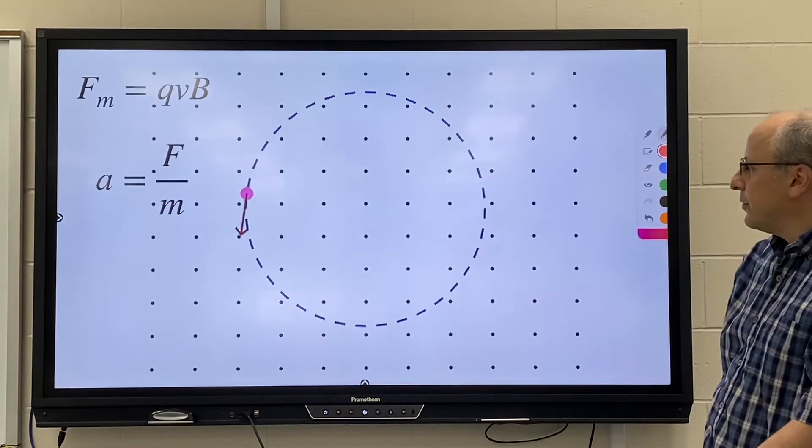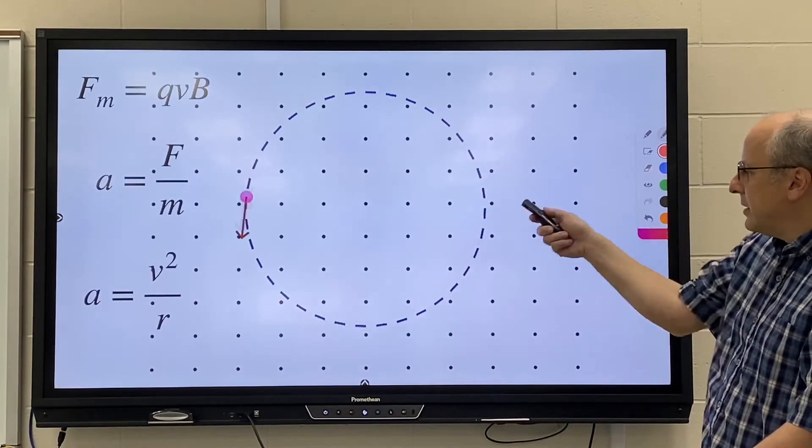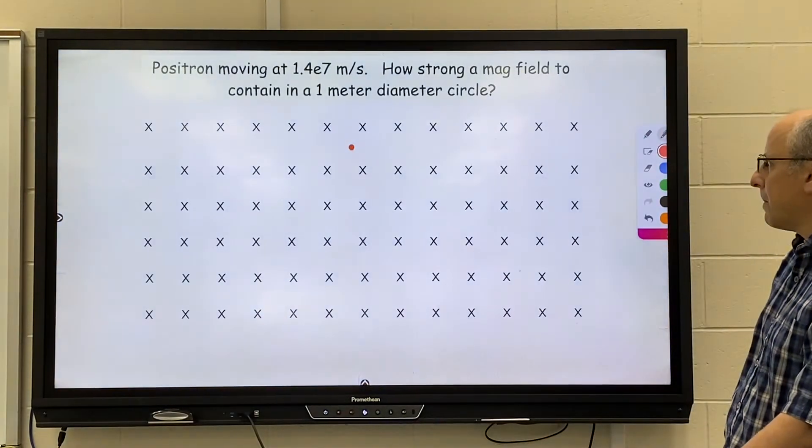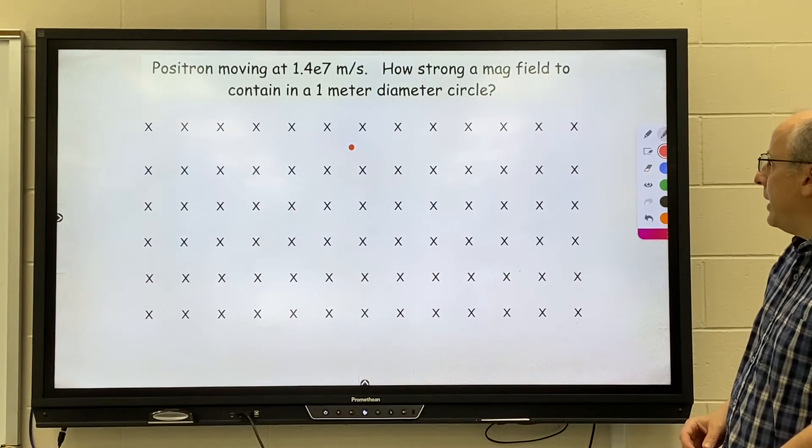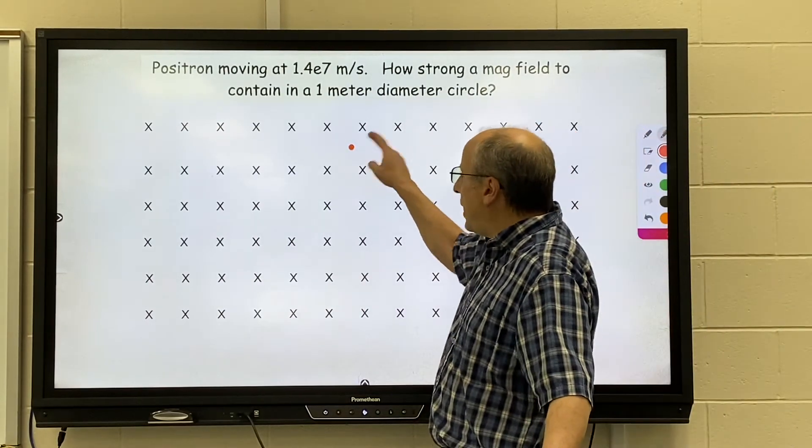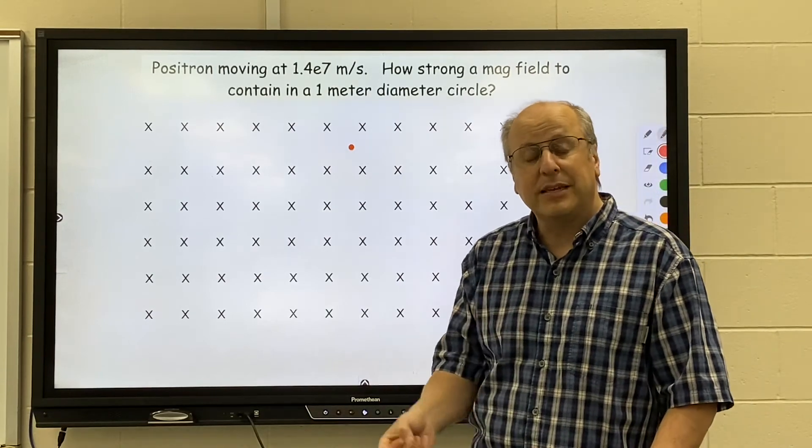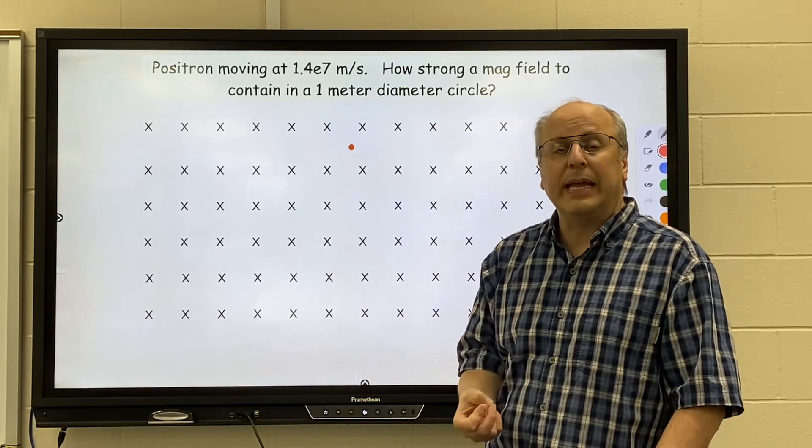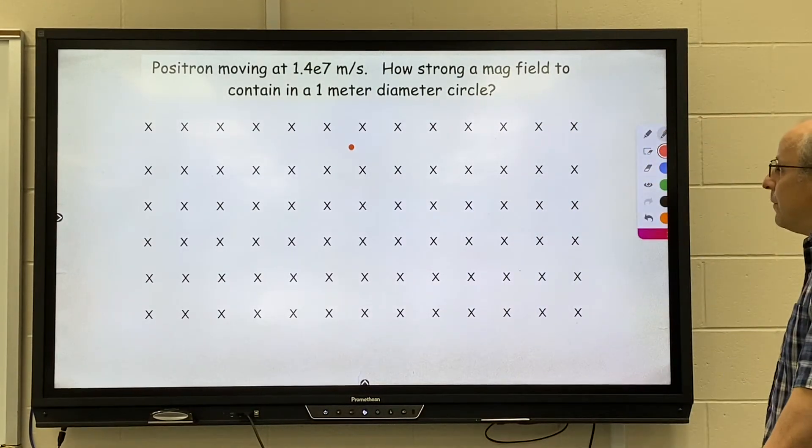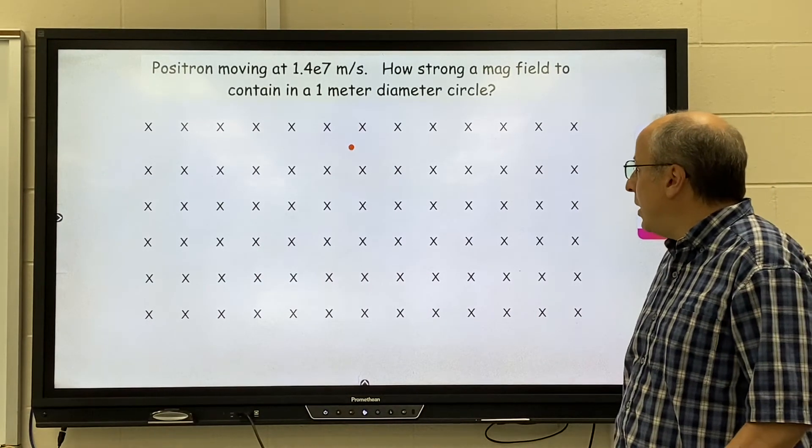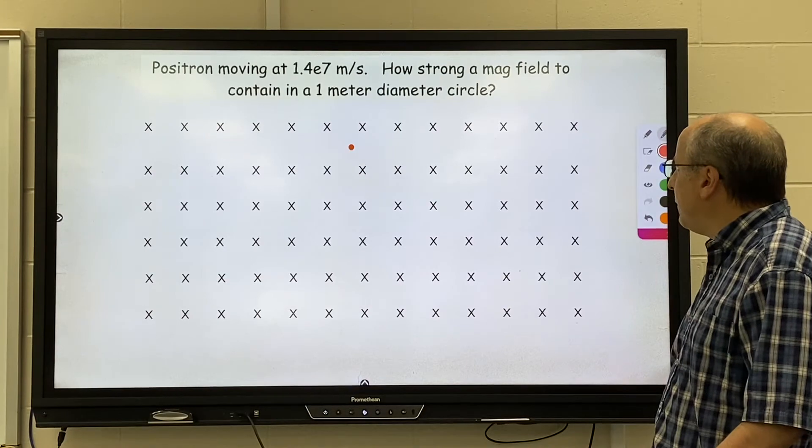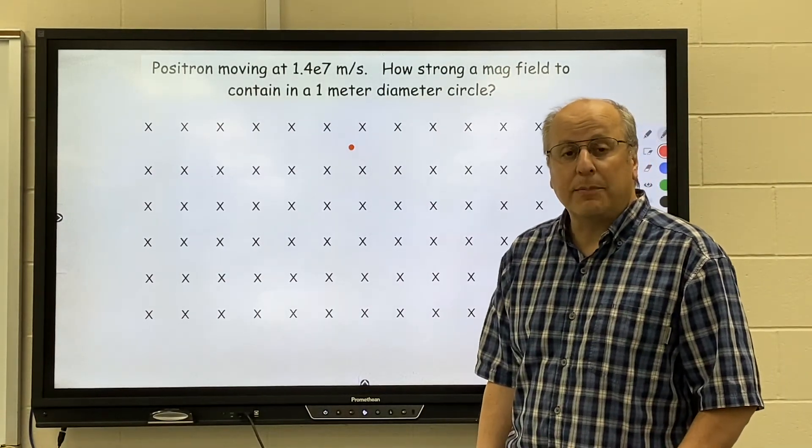Okay, so what I'd like you to do is have a positron, so remember that's just a positive electron, so it's got the same mass and charge as an electron, it's just positive instead of negative. It's moving at a speed of 14 million meters per second. I'd like it to be contained in a circle of one meter in diameter. Don't forget to make it a radius. And I want you to figure out the B value that would allow us to accomplish that task.